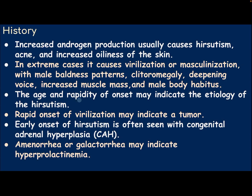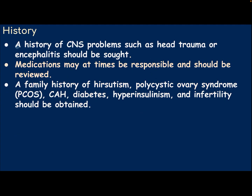The age and rapidity of onset may indicate the etiology of hirsutism. Rapid onset of virilization may indicate a tumor. Early onset of hirsutism is often seen with congenital adrenal hyperplasia. Amenorrhea or galactorrhea may indicate hyperprolactinemia. A history of CNS problems such as head trauma or encephalitis should be sought. Medications may at times be responsible and should be reviewed. A family history of hirsutism, polycystic ovarian syndrome, congenital adrenal hyperplasia, diabetes, hyperinsulinism, and infertility should be obtained.